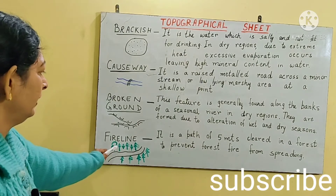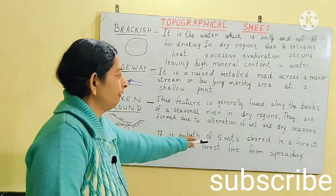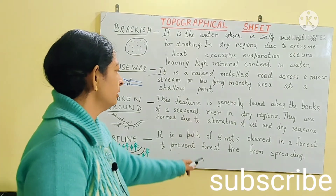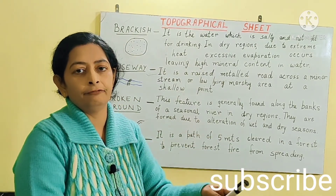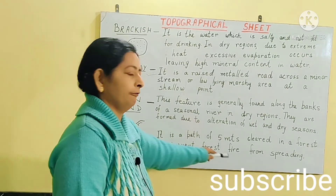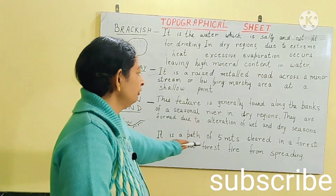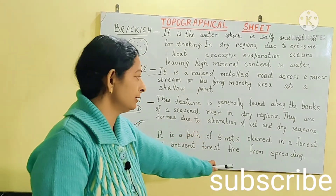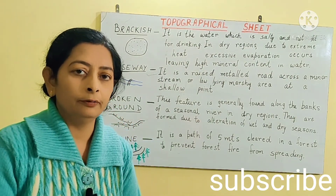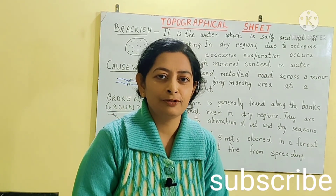Fire line is a feature found in forest areas. It is a path of approximately five meters that is cleared within a forest. This cleared path prevents a forest fire from spreading. If asked 'what do you understand by fire line,' the answer is: it is a path of five meters cleared in a forest to prevent forest fire from spreading. This concludes the meaning of words given beside conventional signs and symbols.